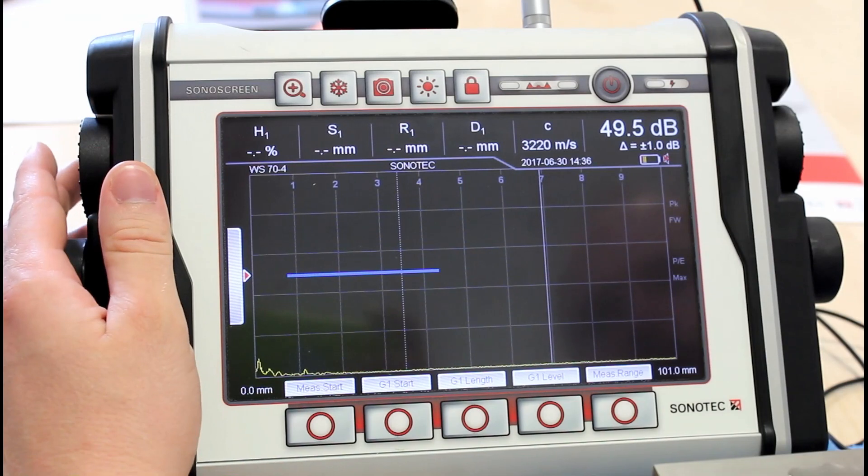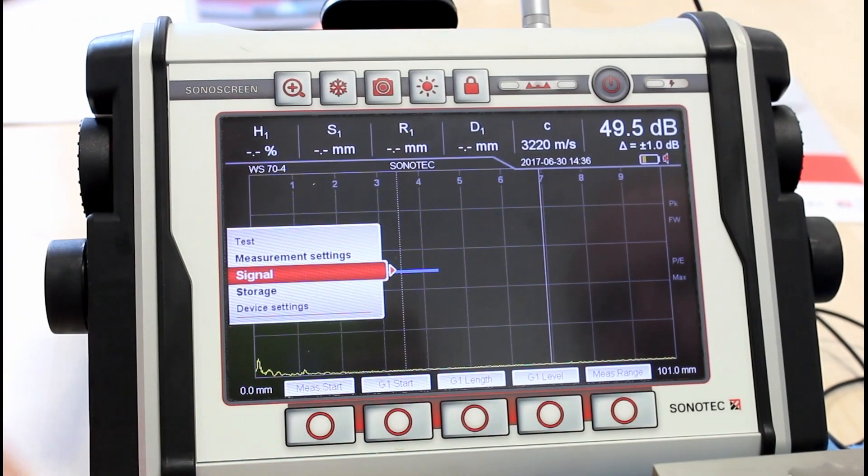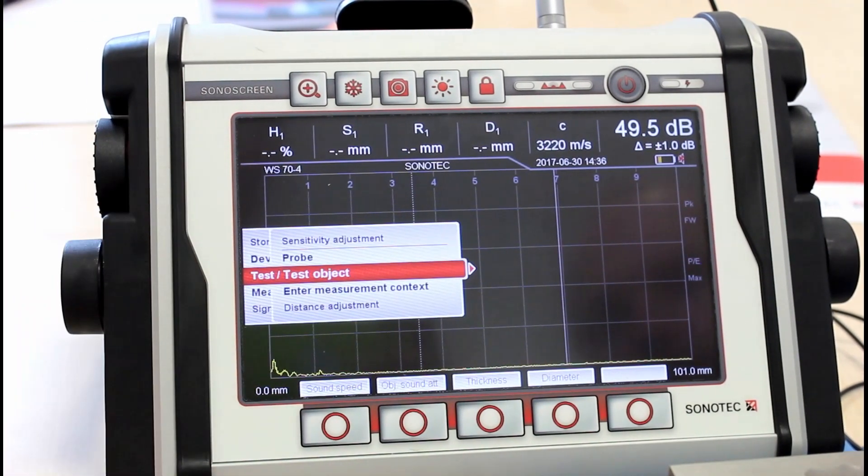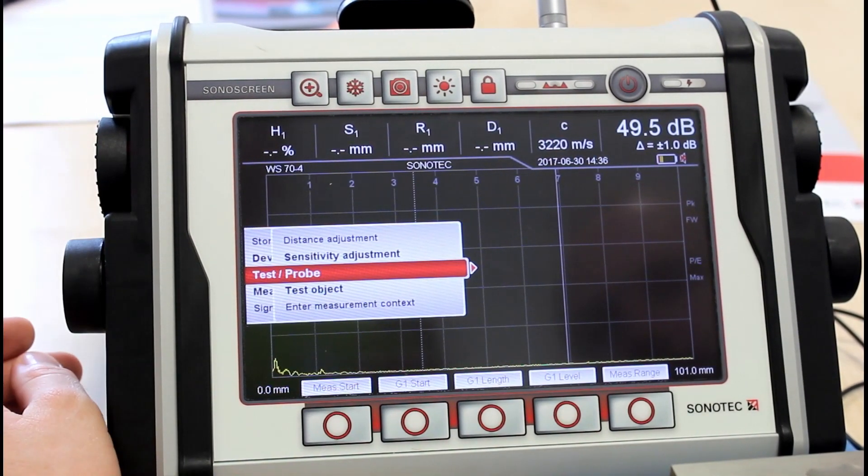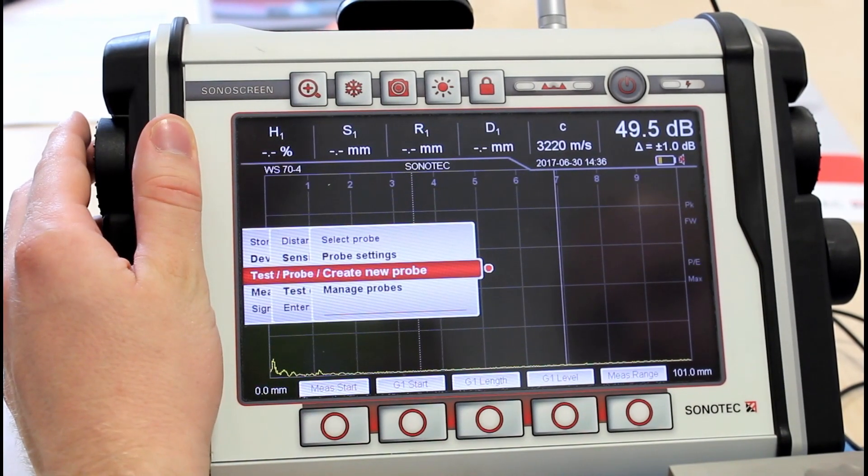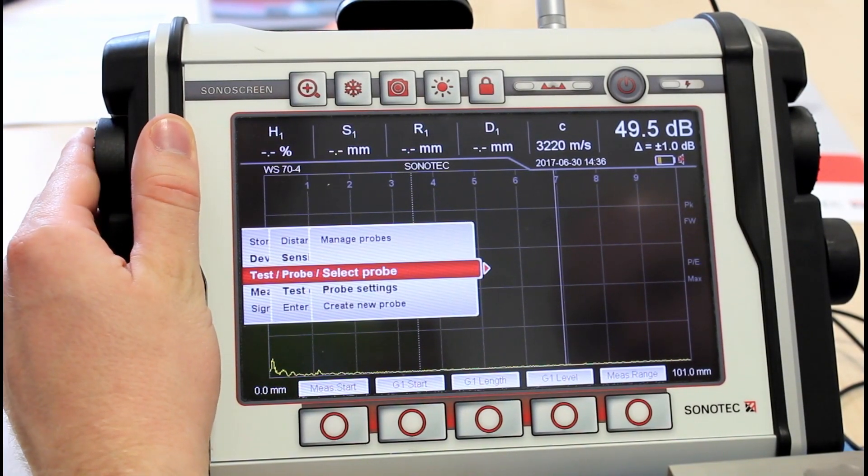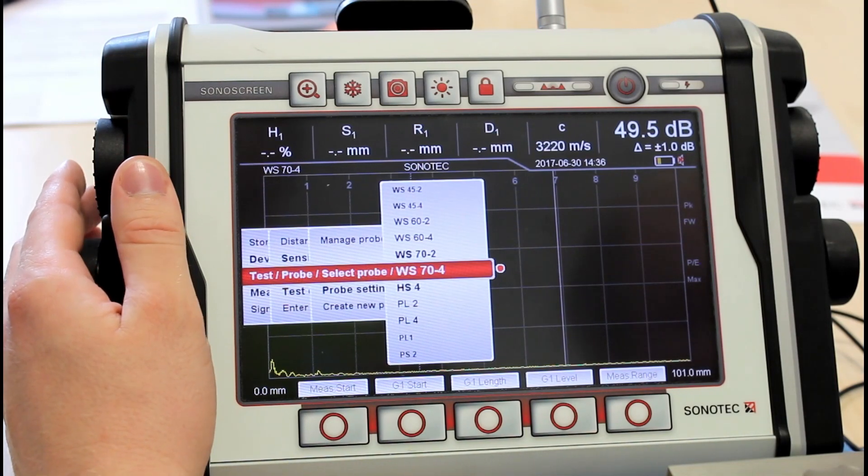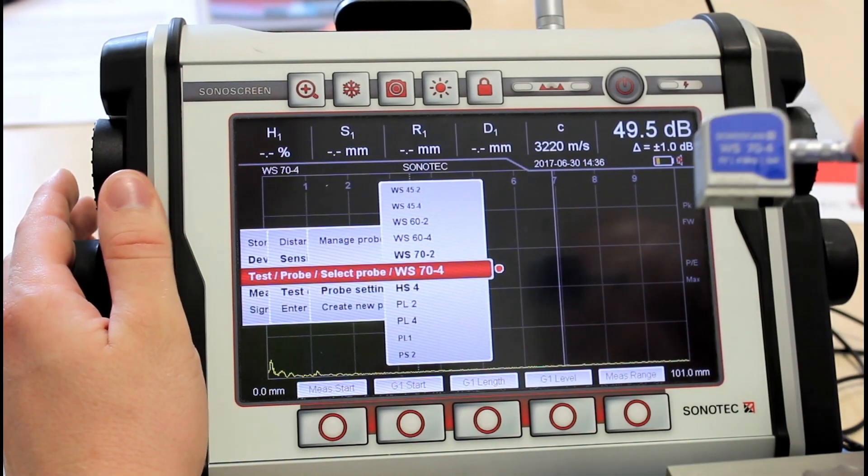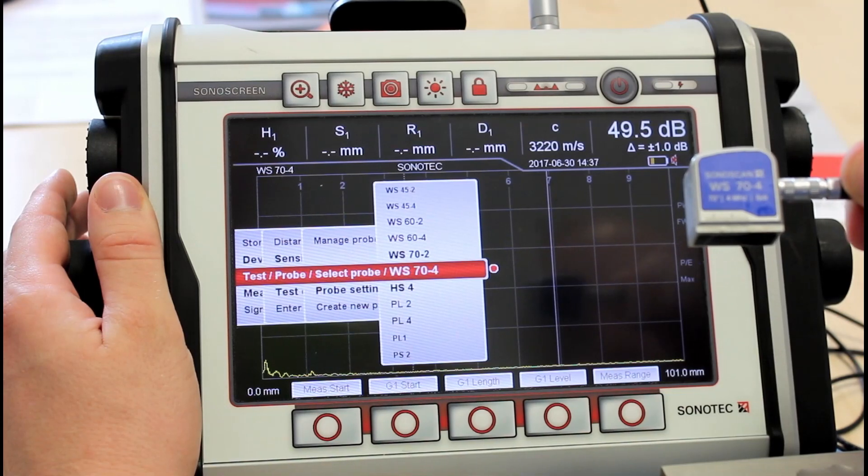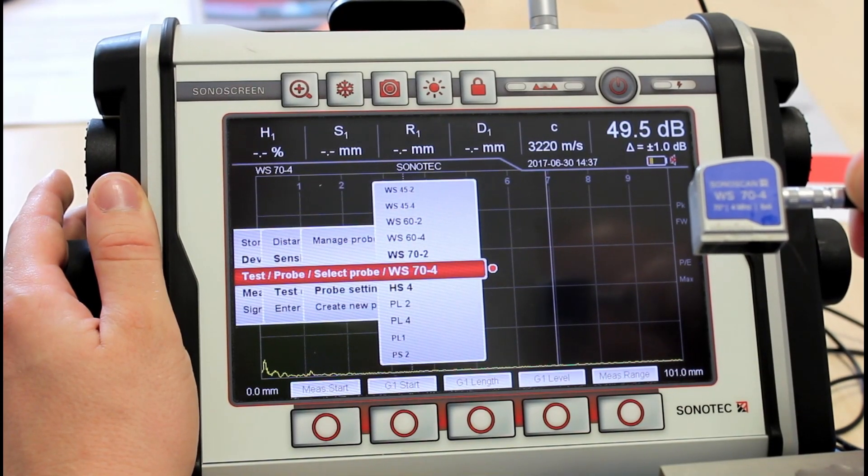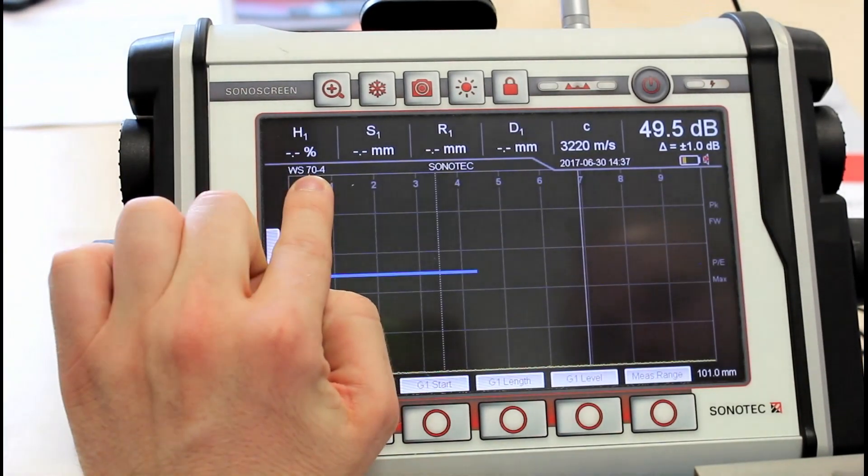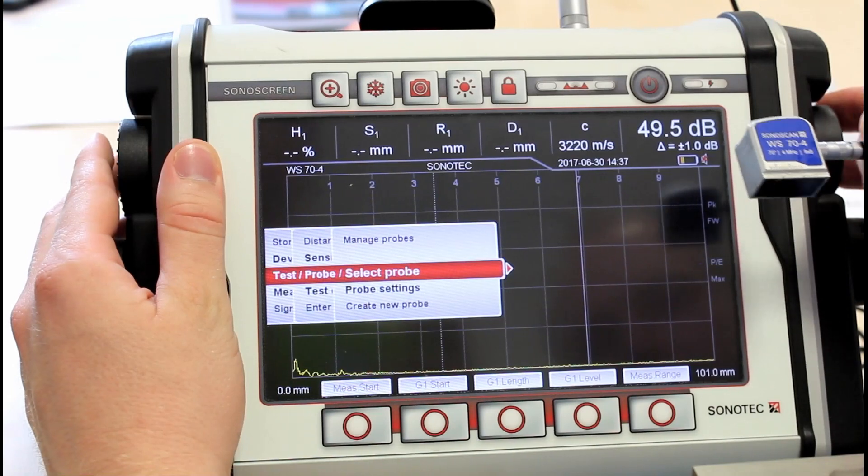Let's do a sample test setup. The most important menu point is the test menu. The first thing you want to do is select your probe. You have two options. All the Sonotec probes are already pre-installed and you can simply select from a list. Right now we want to use a WS74 seventy degree four megahertz probe with an eight by nine millimeter element. So we are going to select that probe and it is up here. We can double check the right probe was selected.